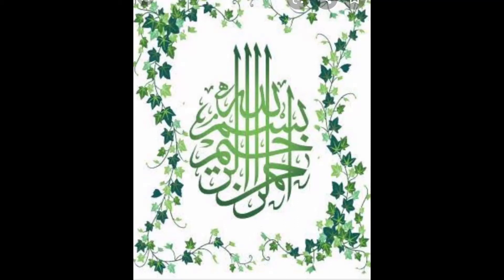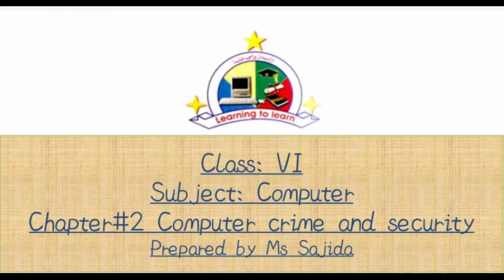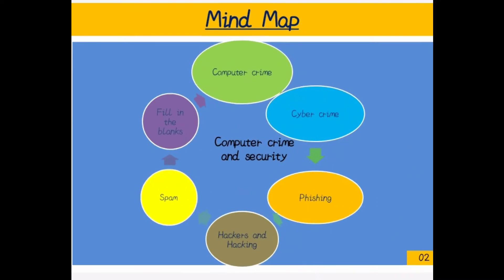Bismillahirrahmanirrahim, Assalamu Alaikum students, welcome to ASF e-learning program. Miss Ashita is here, Class 6, subject Computer. Today we will start chapter number two: Computer Crime and Security. Let's have a view of the chapter through a mind map. Computer crime and security include: computer crime, cyber crime, phishing, hackers and hacking, spam, fill in the blanks, and activity.